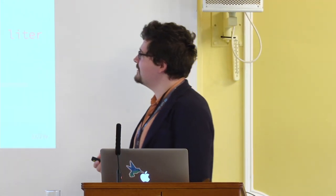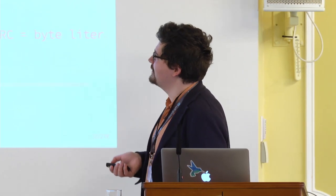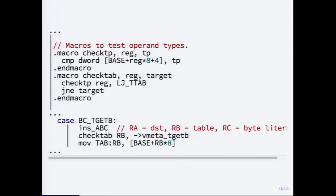Some people might ask why changing the tagging scheme is such a tough exercise. It is tough because the interpreter in LuaJIT is about a thousand lines of assembly code written by hand for each architecture it runs on. It's not a normal assembler, but it's still assembly, so it's very hard to change all the places where you have a dependency on your tagging scheme.